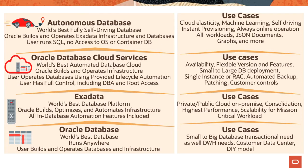Let's now look at the use cases for these services. Autonomous Database is the world's best fully self-serving database. Oracle builds and operates Exadata infrastructure and databases. The user runs SQL without any access to the operating system or the container database. This is pretty useful for customers who want the elasticity of the cloud, customers with workloads for machine learning, and customers who do not want to spend too much time tuning code, and who have use cases for instant provisioning.